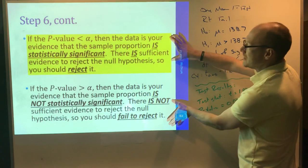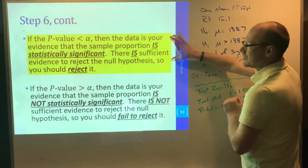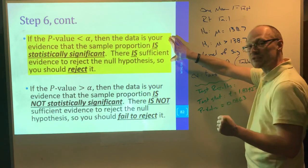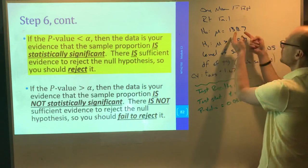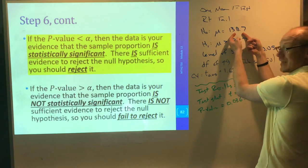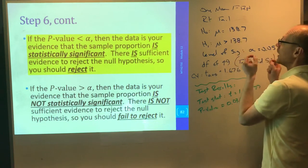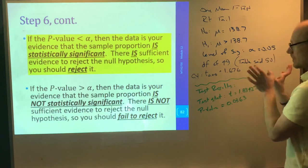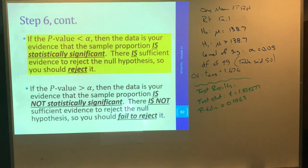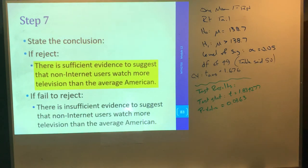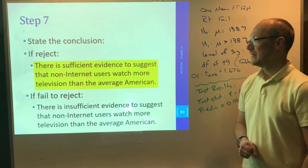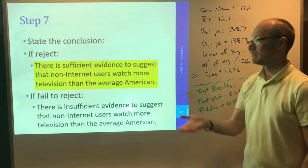Which one? The ises or the is-nots? It is the ises that we get to keep. We found some statistically significant evidence that has brought about a change. Our thinking is no longer that everyone is 138.7. But if you further look at just non-internet users, we find out that it is higher than that. So, what is our conclusion? We're rejecting. That means there is sufficient evidence to suggest that non-internet users watch more television than the average American.